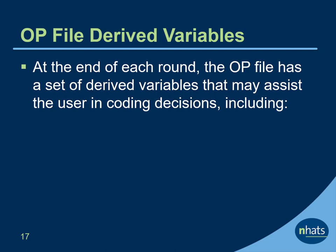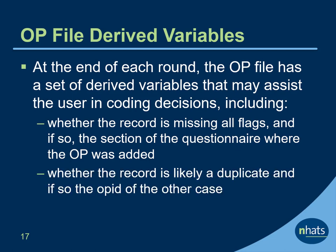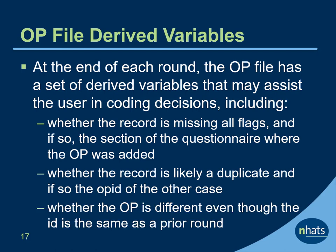At the end of each round, the OP file has a set of derived variables that may assist the user in their coding decisions. These include whether the record is missing all flags and if so, the section of the questionnaire where the OP was added; whether the record is likely a duplicate and if so, the OP ID of the other case; and whether the OP is different even though the ID is the same as a prior round.